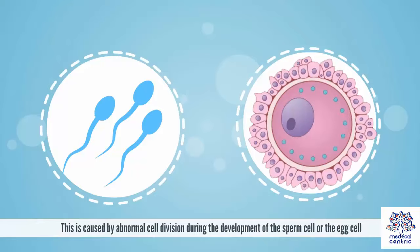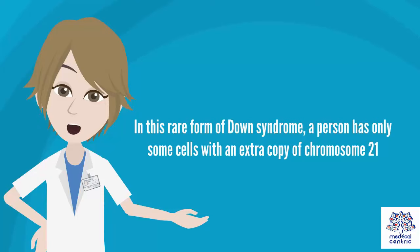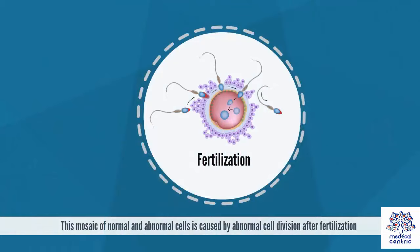Mosaic Down syndrome: In this rare form of Down syndrome, a person has only some cells with an extra copy of chromosome 21. This mosaic of normal and abnormal cells is caused by abnormal cell division after fertilization.